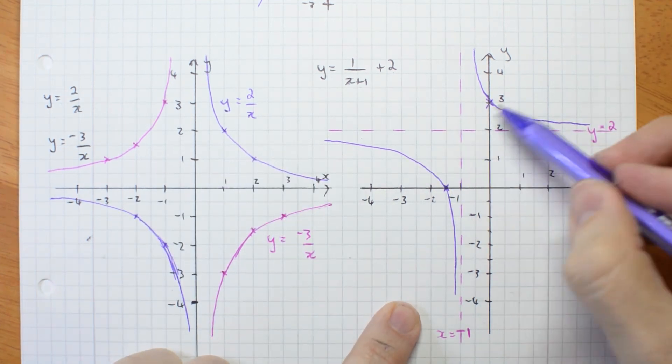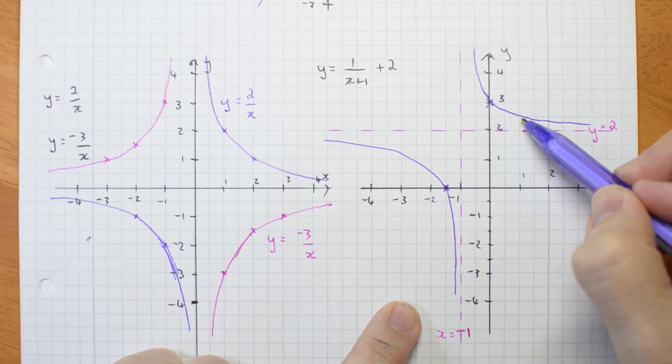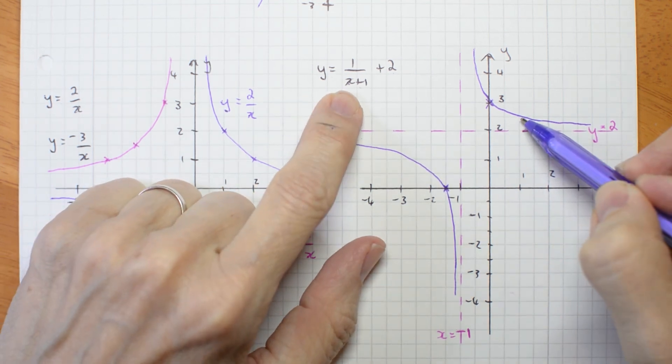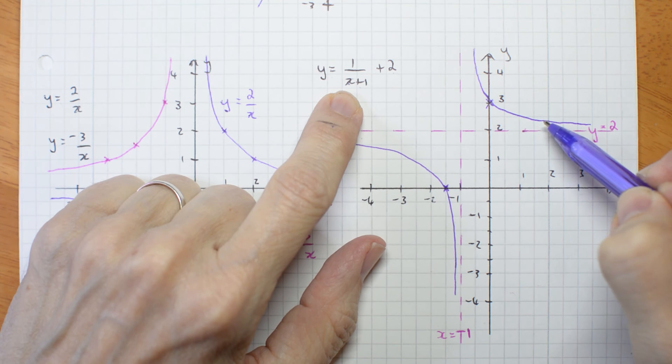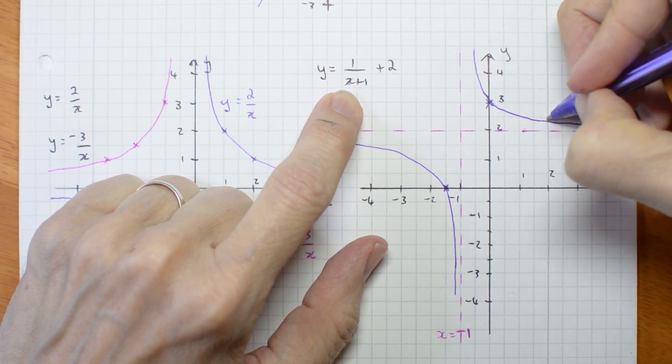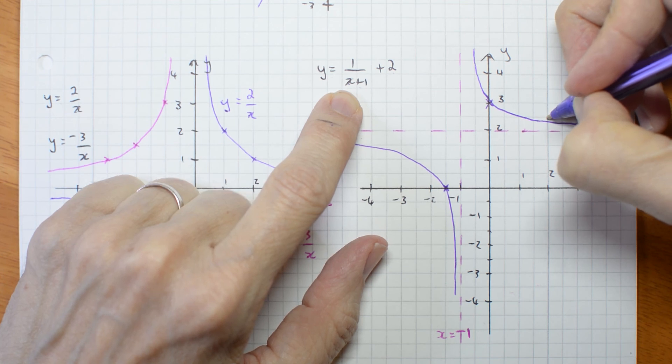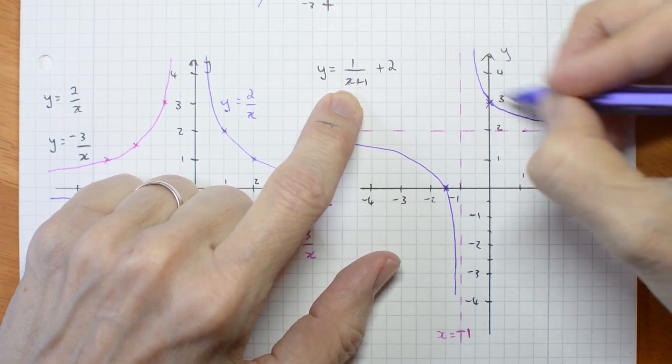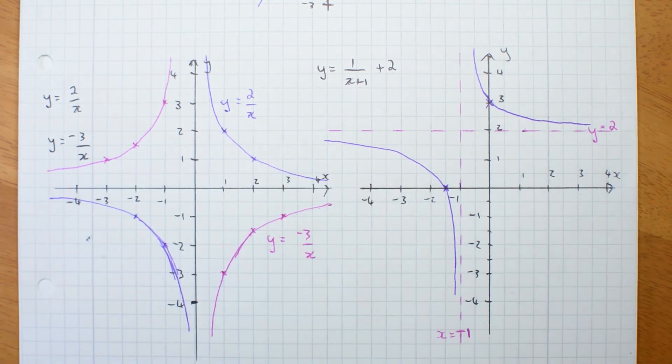If you wanted, you could pick one or two more values of x to substitute. For example, x equals 1 is a half plus 2 is actually 2 and a half. So it doesn't actually get that low until out here. So my graph isn't quite accurate. You could put a few more points in if you wanted to to get it a bit more accurate.